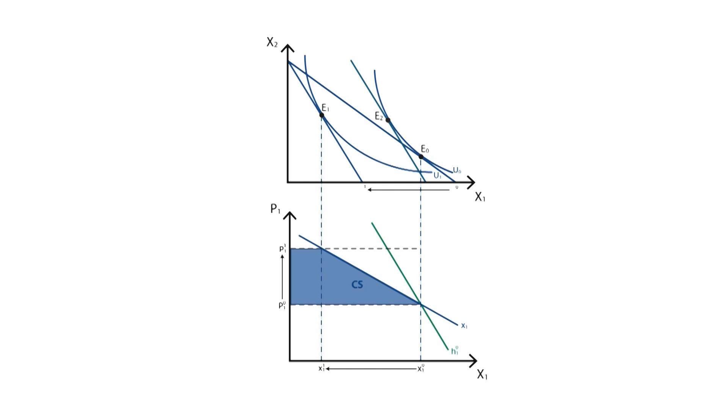This means, at the new level of prices, how much is required to compensate the effect of the price increase. The compensated variation is the theoretical amount of money the individual would need to maintain their level of utility, putting them back on their original utility curve.